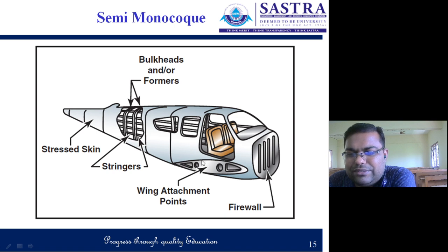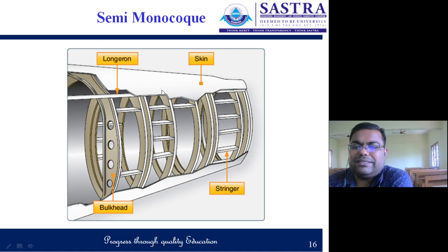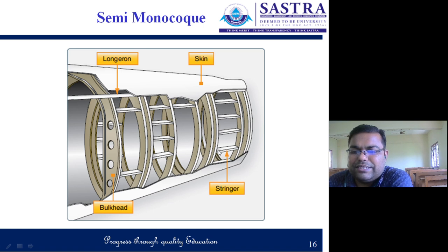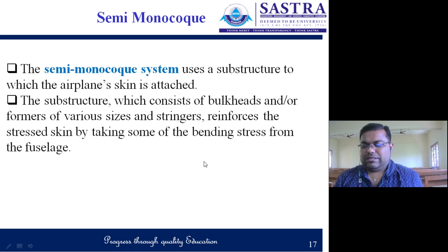This is the longeron — the bulkhead is connected to the outer skin by stringers. Stringers attach the skin to the formers, and formers are attached to the longerons. There will be uniform load distribution from skin to former to longerons. Wing attachment points are here, and longerons run from the cockpit up to the tail. The firewall is where the engine is attached. If we remove the skin, the fuselage shows circular ring structures: bulkheads, formers, stringers attached to the skin, and longerons running vertically.